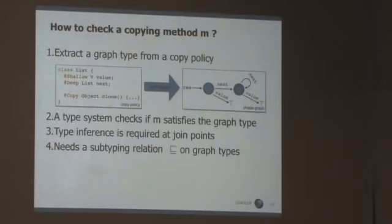Then we have a type system to check that memory, and the method M will satisfy such a graph type here. Now, the type inference, some type inference is required when several flows of control can meet at program points, because different kinds of memory might meet, so you have to find the best representation of what is the summary of all these memories that can flow into points.